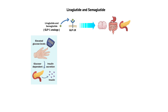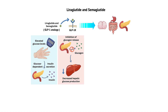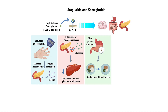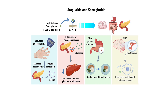Second, these drugs suppress glucagon secretion from pancreatic alpha cells. By inhibiting glucagon release, they decrease hepatic glucose production, thereby reducing blood glucose levels. Third, liraglutide and semaglutide slow gastric emptying, which prolongs the feeling of fullness and reduces food intake, contributing to weight loss by promoting satiety and decreasing overall caloric consumption. Finally, liraglutide and semaglutide have been shown to directly act on the central nervous system, specifically on the hypothalamus, where they enhance satiety signaling and reduce hunger. These central effects may be mediated through the activation of GLP-1 receptors in the brain, or through indirect mechanisms such as vagal afferent signaling.